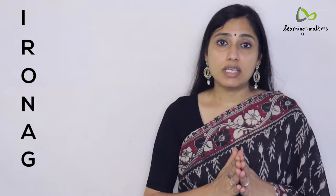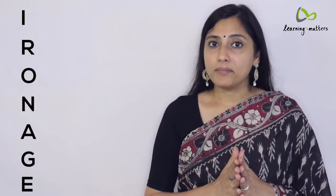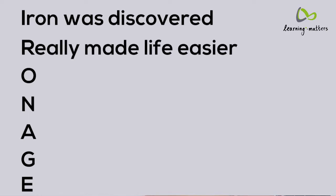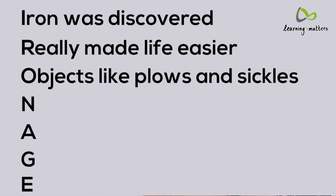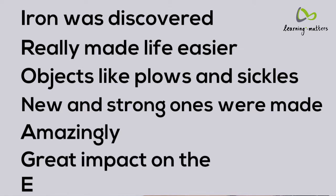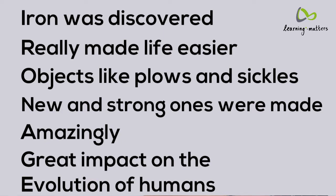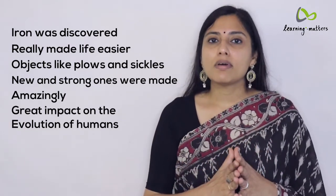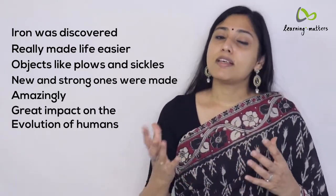The letters written down vertically for the Iron Age are I-R-O-N-A-G-E. Here's our poem: Iron was discovered; Really made life easier; Objects like plows and sickles; New and strong ones were made; Amazingly great impact on the evolution of humans. As you can see, writing an acrostic poem like this allows your learners to recall and remember ideas and concepts they've already learned.